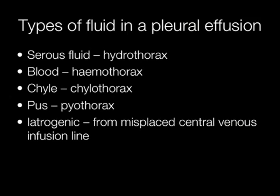Several different types of fluid can occur in a pleural effusion. The usual type is serous fluid producing a hydrothorax, blood produces a hemothorax, chyle produces a chylothorax, and pus produces a pyothorax.